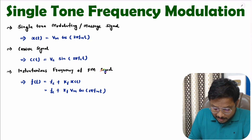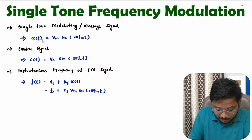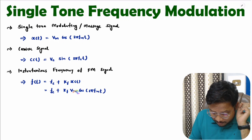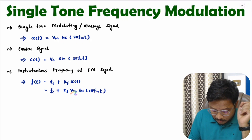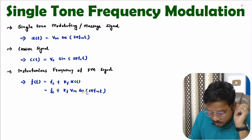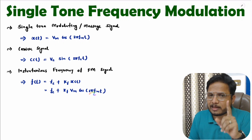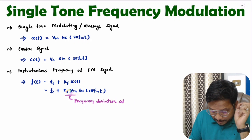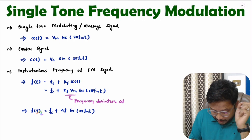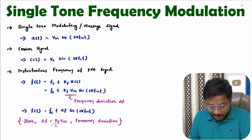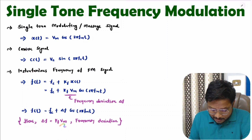In the FM signal we are changing the frequency of the carrier with respect to the message signal. Here kf is the frequency sensitivity and Vm is the maximum amplitude of the message signal. Their product, kf·Vm, represents the maximum frequency deviation, since cos(2π·fm·t) has a maximum value of ±1. So maximum deviation Δf = kf·Vm, giving f(t) = fc + Δf·cos(2π·fm·t).